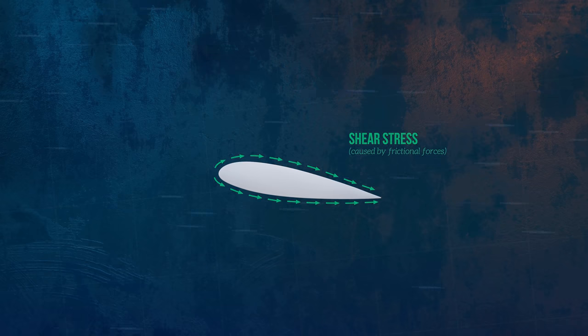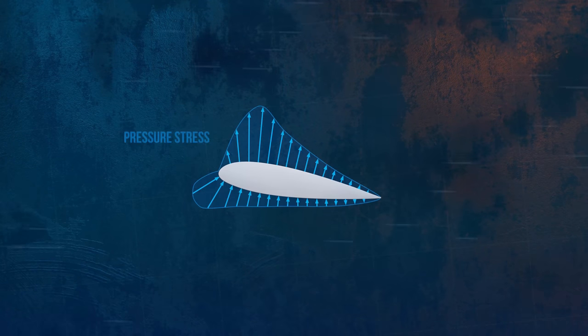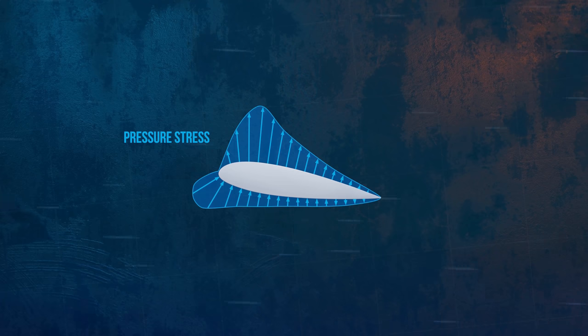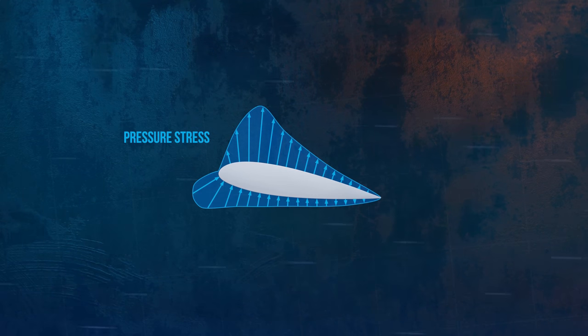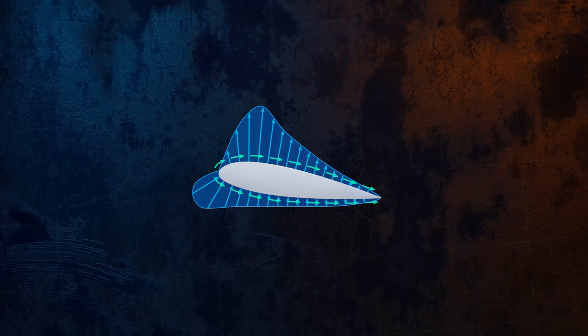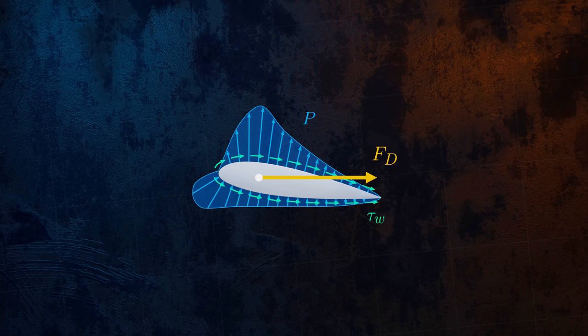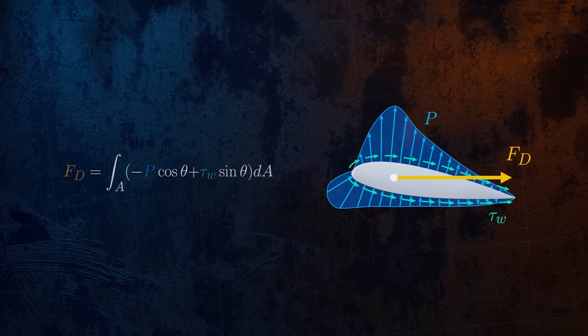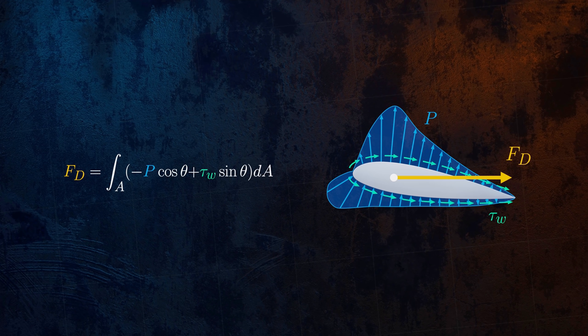Then, we have the pressure stresses. They act perpendicular to the object's surface, and are caused by how pressure is distributed around the object. The drag force is the resultant of these two stresses in the direction of the flow. So, if we know exactly how the stresses are distributed over the surface of our object, we can integrate them to obtain the resultant drag force.